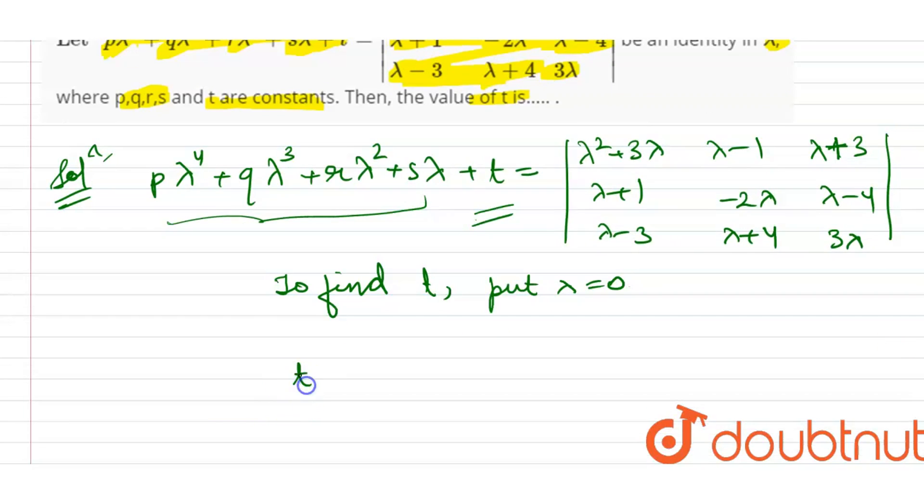So, t equals the determinant with entries: 0, minus 1, 3; 1, 0, minus 4; minus 3, 4, 0.